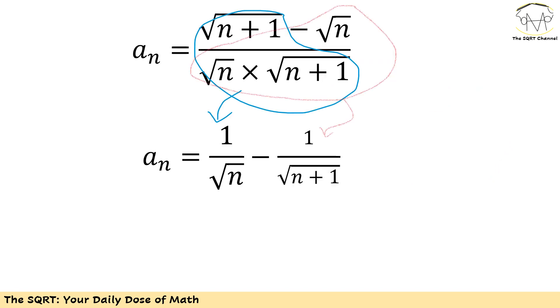Now this is what I have. I have √(n+1) minus √n over √n times √(n+1). Obviously I can simplify it further.